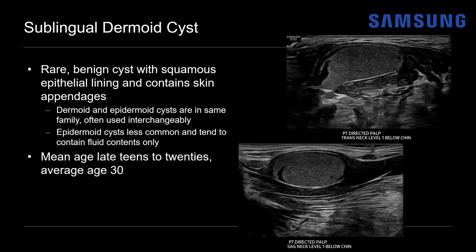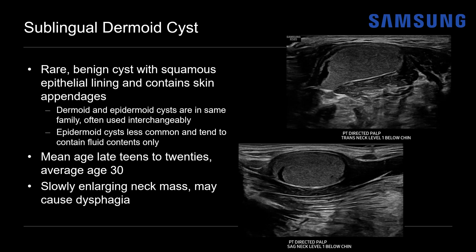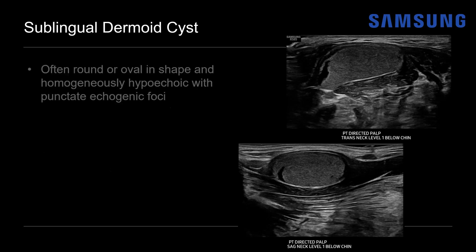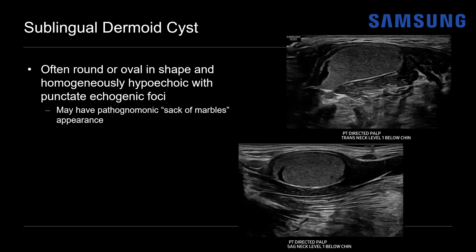The mean age of patient presentation is in the late teens to 20s, with an average age of 30. Patients may present with a slowly enlarging neck mass that can be asymptomatic but sometimes causes dysphagia. They're often round or oval and homogeneously hypoechoic with punctate echogenic foci — not seen in this case. They may also have a pathognomonic 'sac of marbles' appearance, similar to floating echogenic spheres sometimes seen in dermoid cysts of the ovary.